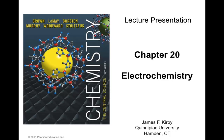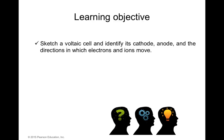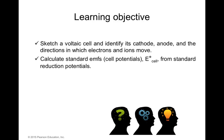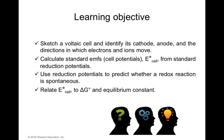This is the second part of module 20. By the end of this module, you will be able to sketch a voltaic cell and identify its cathode, anode, and the direction in which electrons and ions move. You will also be able to calculate standard EMF and cell potentials, and use reduction potentials to predict whether a redox reaction is spontaneous. Finally, you will relate the potential of the cell to delta G and the equilibrium constant.